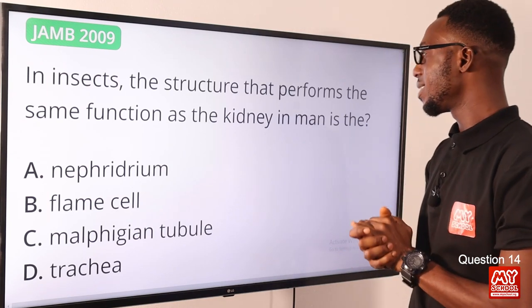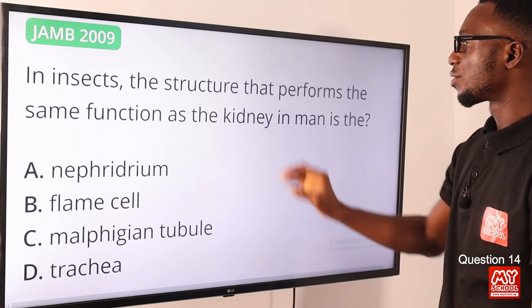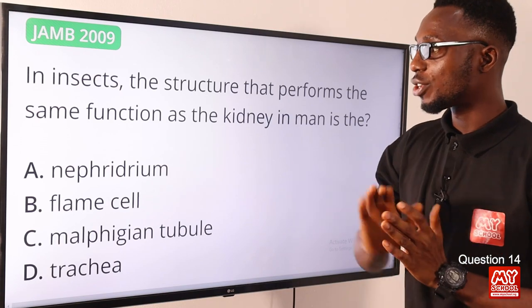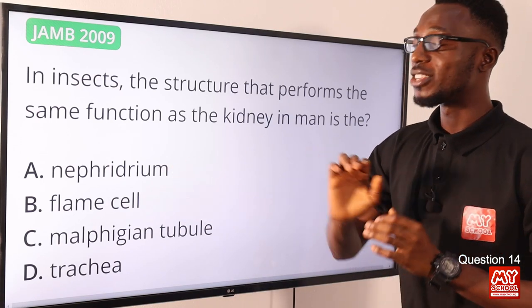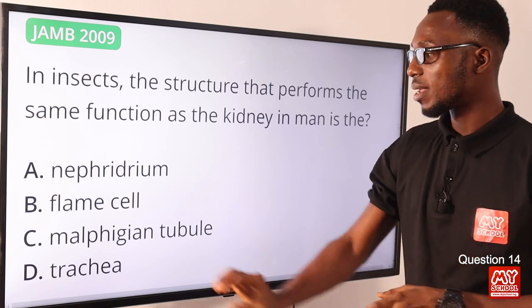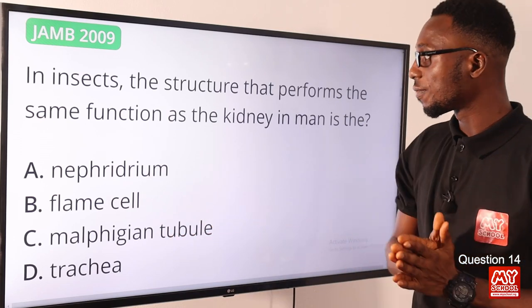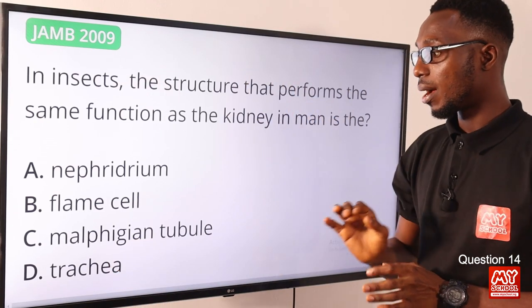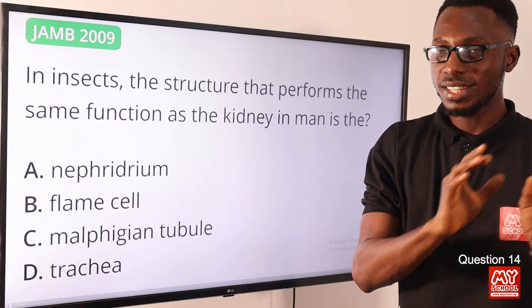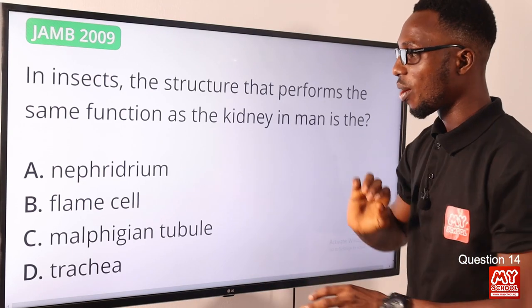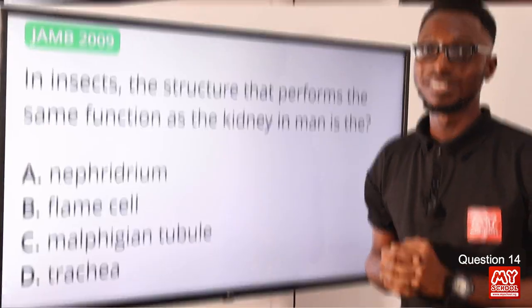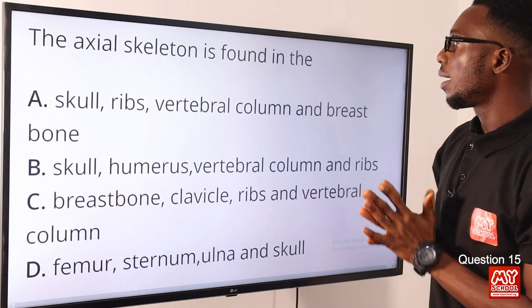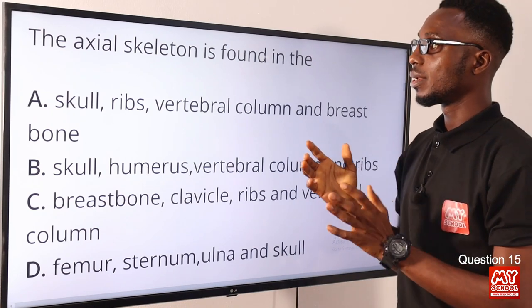Question fourteen: in insects, the structure that performs the same function as the kidney in man is the Malpighian tubule. For reference: the kidney performs excretion in humans, the nephridium in earthworms, flame cells in flatworms, and Malpighian tubules in insects. The tracheal system handles gaseous exchange in insects. Option C is the correct answer.